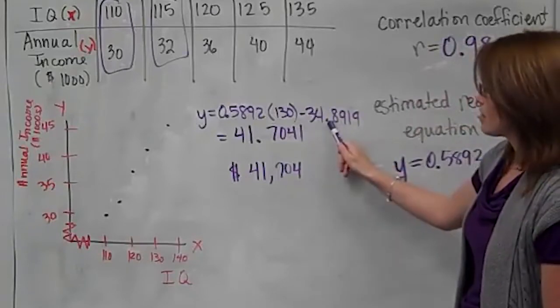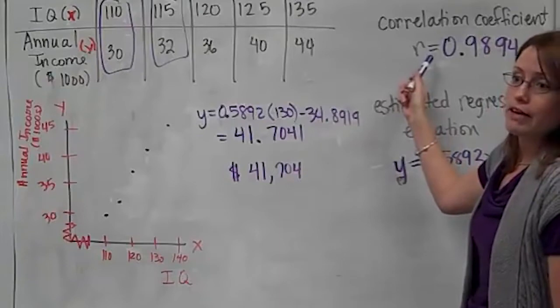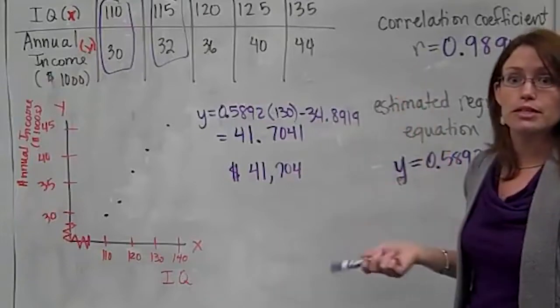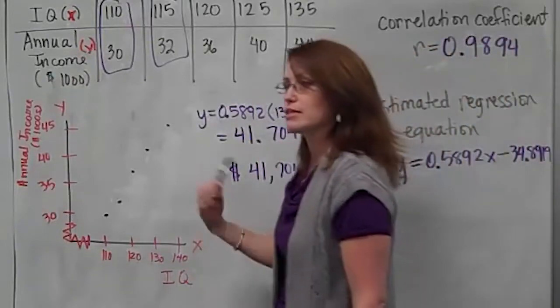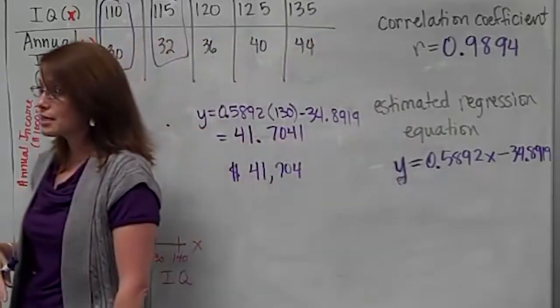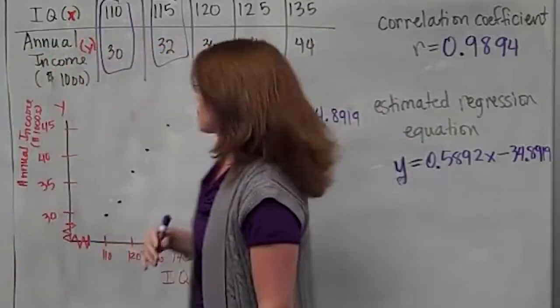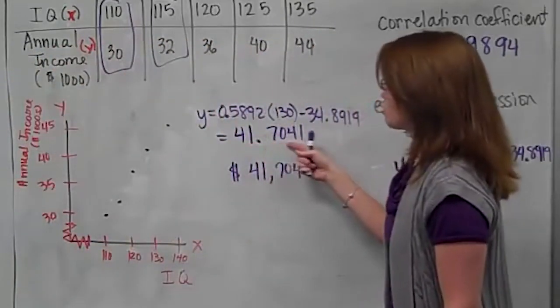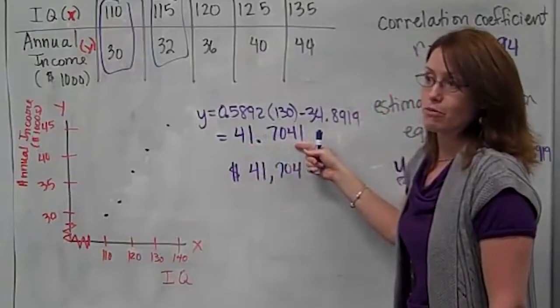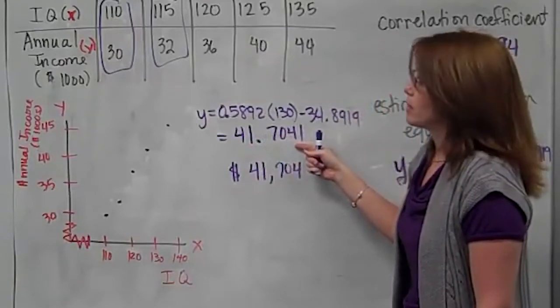0.5892 times 130 minus 34.8919. Remember our guess was 42,000. According to the regression equation, we're close to the guess. We're looking at a salary of probably $41,704. Don't worry about the last one. That could just be cents. But we don't need to get that precise as far as what our salary would be.